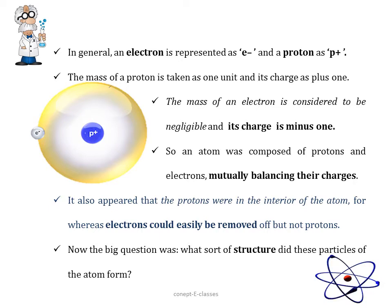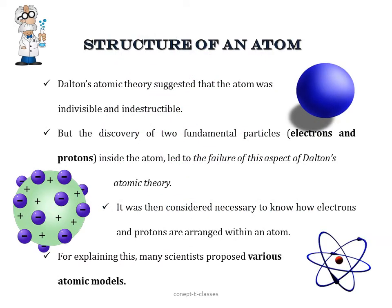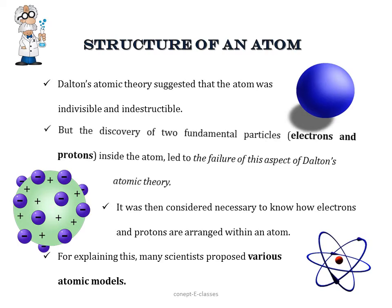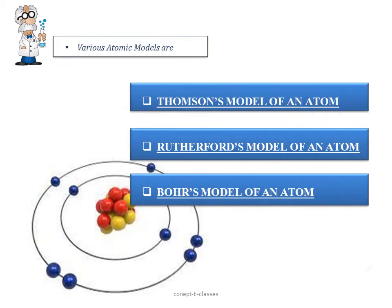Structure of an atom. As we have learned in Chapter 3, Dalton's atomic theory suggested that the atom was indivisible, that it cannot be divided further, and the atom was indestructible. We cannot destroy it as well. But with the discovery of two fundamental particles, electrons and protons inside the atom, this led to the failure of this aspect of Dalton's atomic theory. It was then considered necessary to know how these electrons and protons are arranged within an atom. For explaining this, many scientists proposed various atomic models. Some of the models we are going to study in this chapter are Thomson's model of an atom, Rutherford's model of an atom, and Bohr's model of an atom.